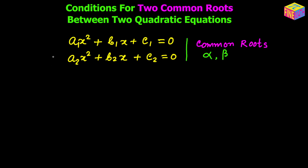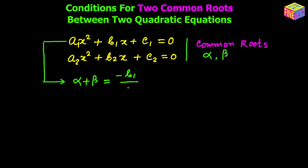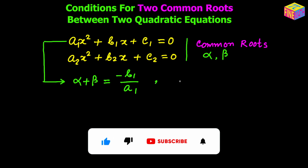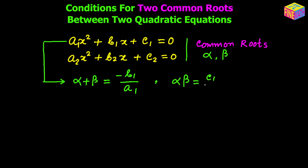α and β will satisfy each of these equations. Now because for each of these equations the roots are α and β, from the first equation the sum of the roots α + β = −b₁/a₁, and the product of the roots α × β = c₁/a₁. So that's all we get from the first equation.